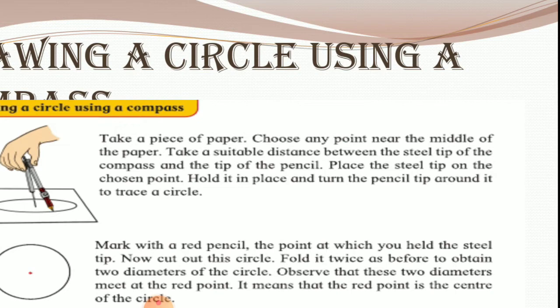Mark with a red pencil the point at which you held the steel tip. Now cut out this circle, fold it twice as before to obtain two diameters of the circle. Observe that these two diameters meet at a red point. It means the red point is the center of the circle.